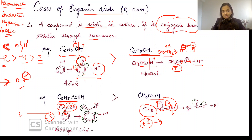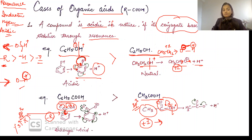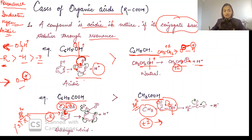The benzene carbon is SP2 hybridized and the methyl carbon is SP3 hybridized. Comparing them, we know that the percent S-character is more in SP2. So the more the percent S-character, the more the electronegativity. So this is a more electronegative group and will withdraw more electron density. That is how benzoic acid will be more acidic than ethanoic acid.